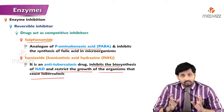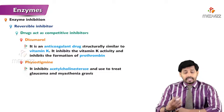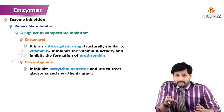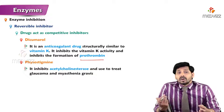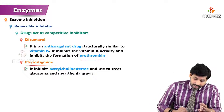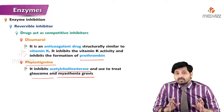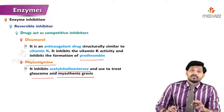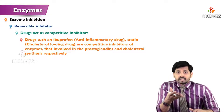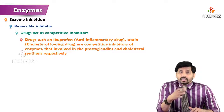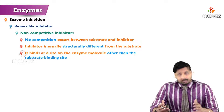Dicoumarol is an anticoagulant drug structurally similar to vitamin K — it inhibits vitamin K activity and inhibits formation of prothrombin, controlling internal clotting. Physostigmine inhibits acetylcholinesterase and is used to treat glaucoma and myasthenia gravis. Ibuprofen is an anti-inflammatory drug, and statins are cholesterol-lowering drugs — both are competitive inhibitors of enzymes involved in prostaglandin and cholesterol synthesis respectively. That's all about competitive inhibition.